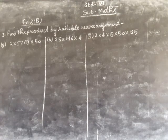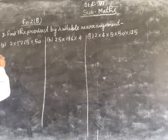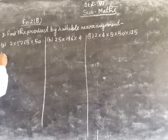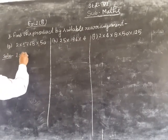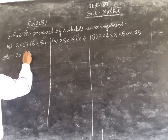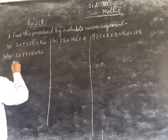So this is the product by suitable rearrangement, one of the parts is part A. So let's solve: 2 multiply by 4768 multiply by 50.